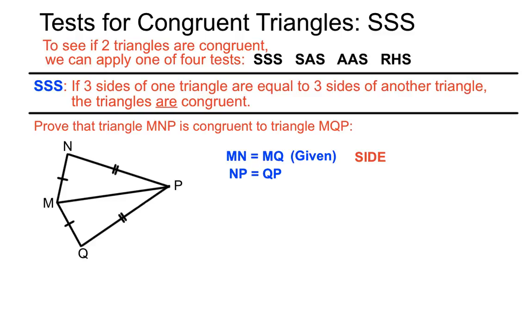NP, you can see, has two markings on it, and QP has two markings on it. So we're saying that, we're just stating that we think they're equal sides there, and that's given to us in the diagram. And the third bit's a bit interesting.